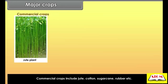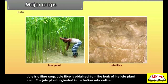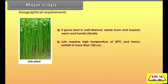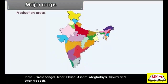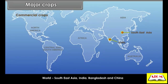Commercial crops include jute, cotton, sugarcane, rubber, etc. Jute is a fiber crop; jute fiber is obtained from the bark of the jute plant stem. The jute plant originated in the Indian subcontinent. Geographical requirements: it grows best in well-drained sandy loam and requires warm and humid climate, high temperature of 30 degrees Celsius, and heavy rainfall of more than 150 centimeters. Production areas — India: West Bengal, Bihar, Orissa, Assam, Meghalaya, Tripura and Uttar Pradesh. World: Southeast Asia, India, Bangladesh and China.